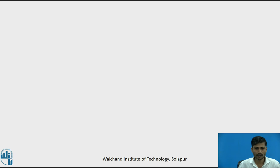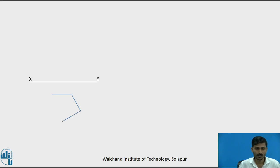To proceed with the answer, first we need to draw the XY line and name it. Next we need to draw the pentagonal surface with one of its bases parallel to the VP. If it is parallel to VP, one edge of the pentagonal surface will be parallel to XY. So I have drawn one edge parallel to VP or XY. The second line of the pentagonal surface has an external angle of 72 degrees between two lines, and similarly the third, fourth, and fifth lines. This is a regular pentagonal surface with an external angle of 72 degrees each.